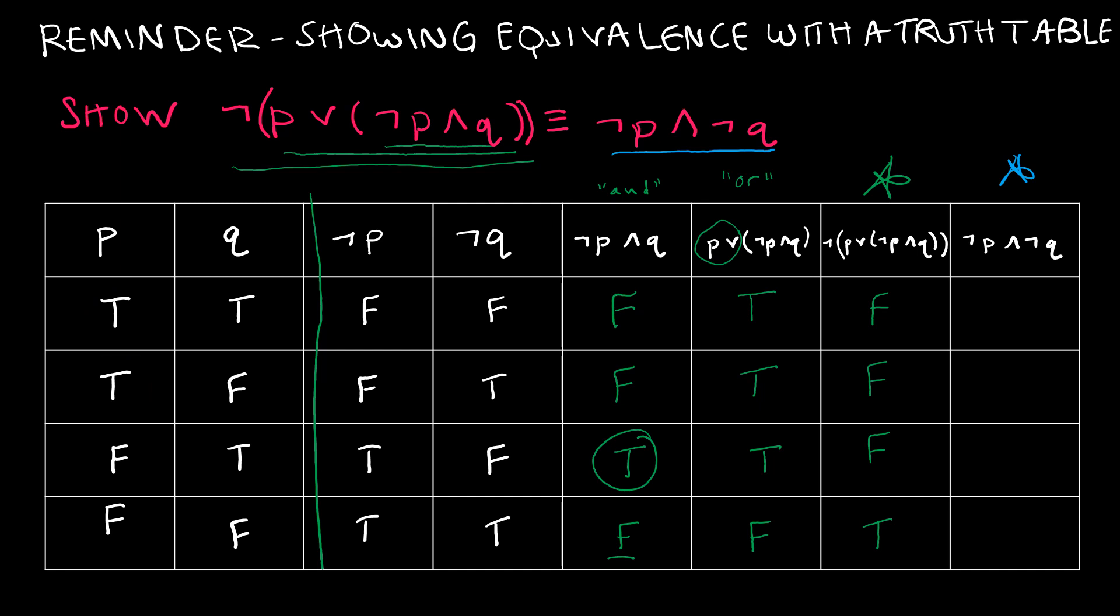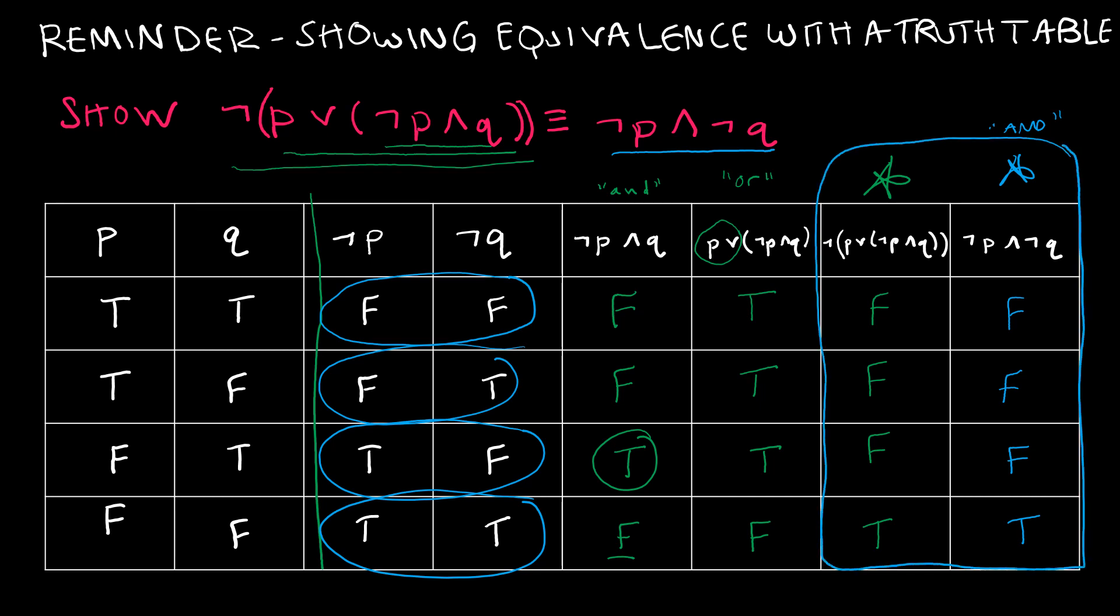So how do I find the values in the blue column? Well I'm looking at not P and not Q. So I'm looking at these two and they both have to be true for me to put a true. That gives me a false. That gives me a false. That gives me a false. Two trues give me a true. So as we can see those two compound propositions are equivalent which we've shown with the truth table.